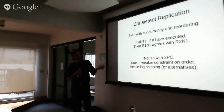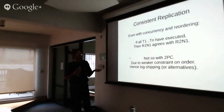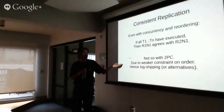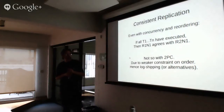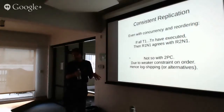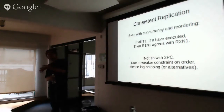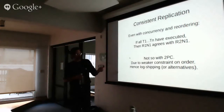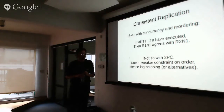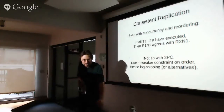With two-phase commit that isn't going to happen, which has led to various attempts to fix it — like keeping a master log and sending it to other nodes. But Calvin's determinism gives consistent replication automatically.